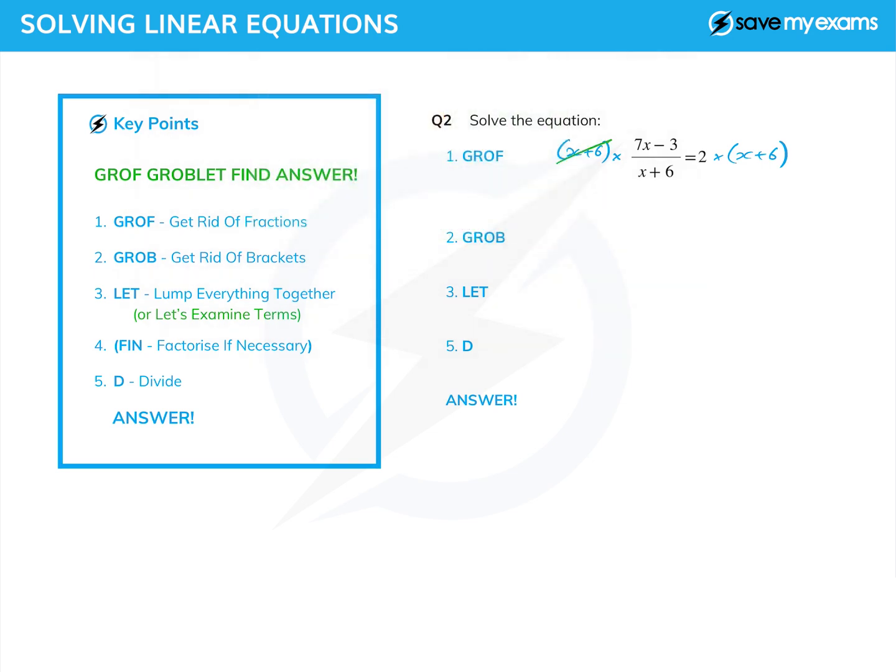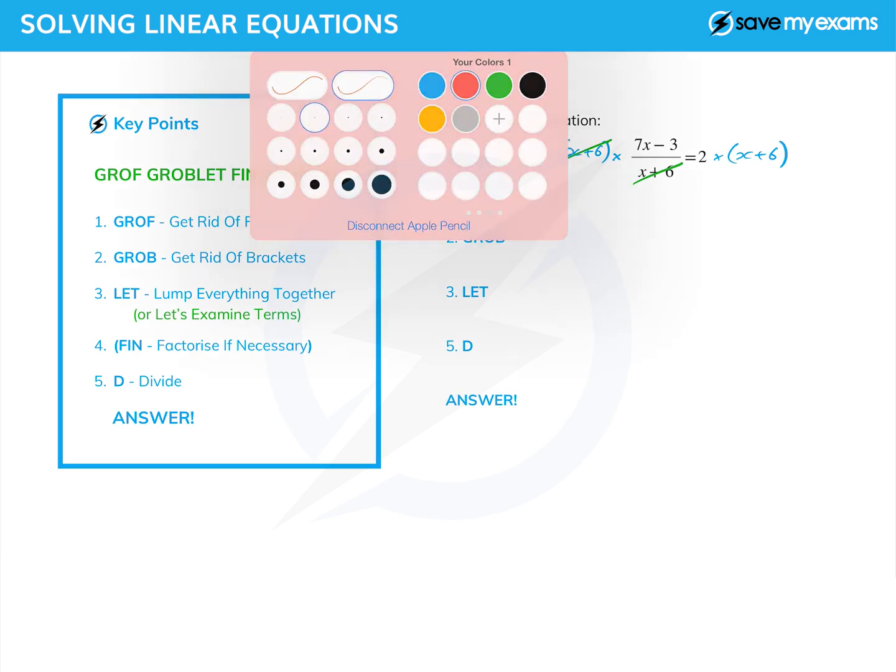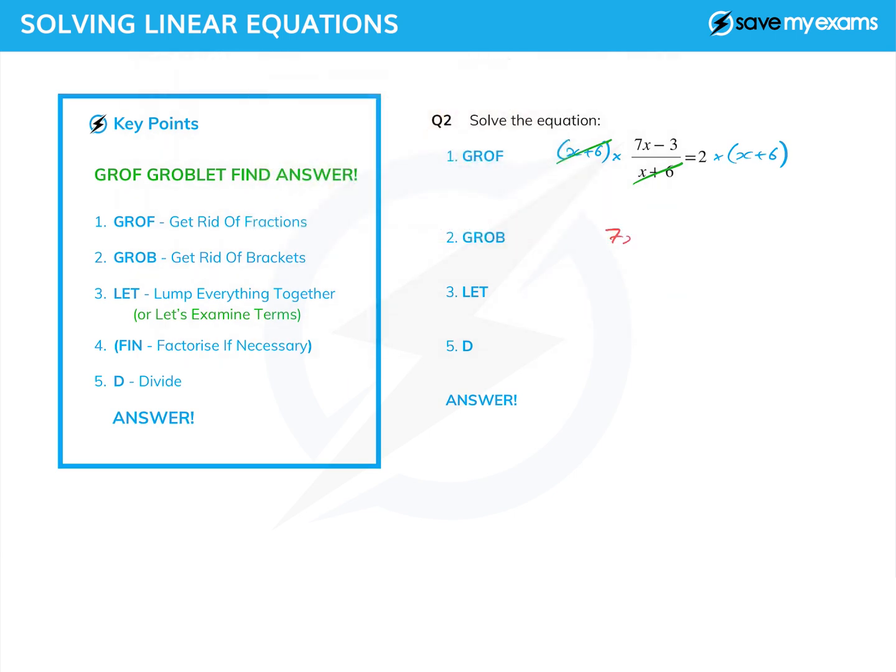And the point of doing that is that the fraction disappears, so the x plus 6 cancels top and bottom. What does that leave us with? That leaves us with 7x minus 3 is equal to 2 times x plus 6. And again we've just got a single bracket to multiply out, so get rid of brackets should be quite straightforward. 2 times the x and 2 times the 6, I've put the links in to remind me what I'm doing. So I've still got the 7x minus 3 on the left and then top link 2 times x is 2x, bottom link 2 times 6 is 12.